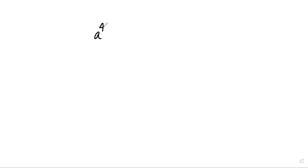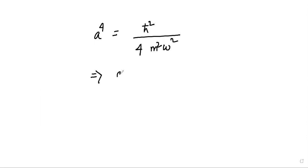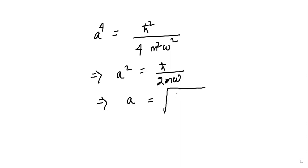Cross-multiplying and rearranging to solve for a: a⁴ = ℏ²/(4m²ω²), so a² = ℏ/(2mω), and therefore a = √(ℏ/(2mω)). This is the value of the ground state position parameter a.